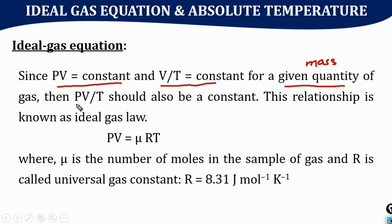This relationship is known as the ideal or perfect gas equation. In a more generalized form, we get PV equals mu RT, where mu is the number of moles in a given sample of gas.